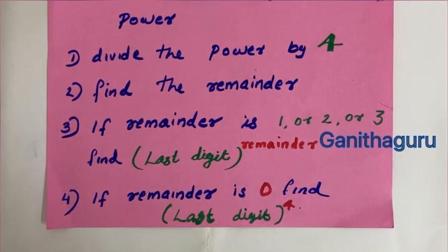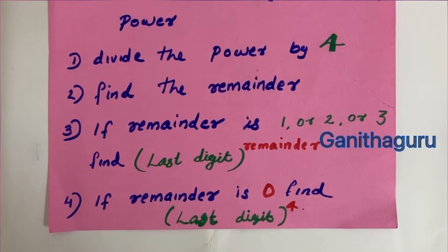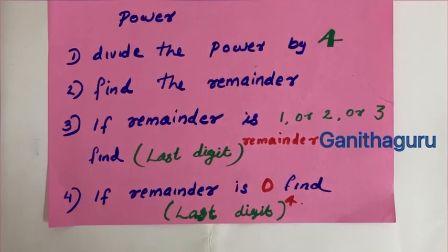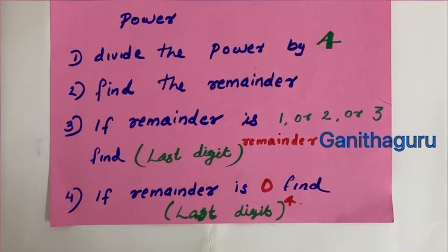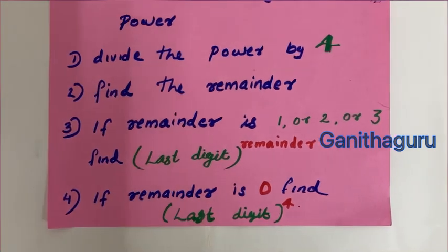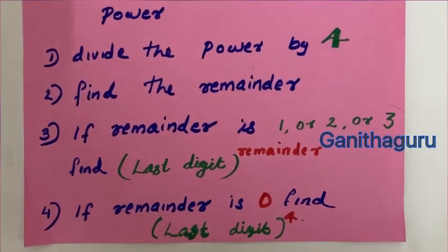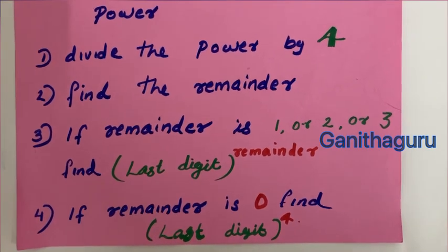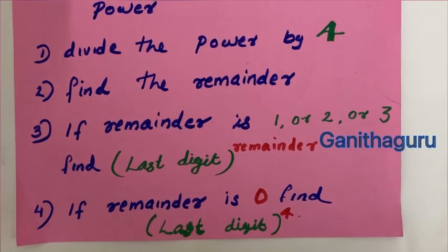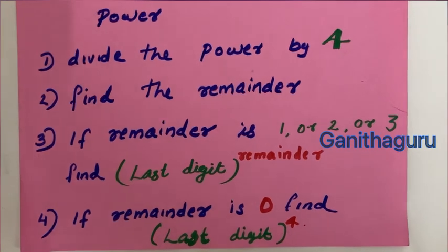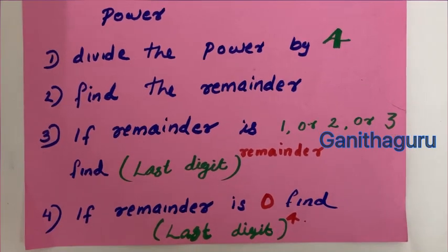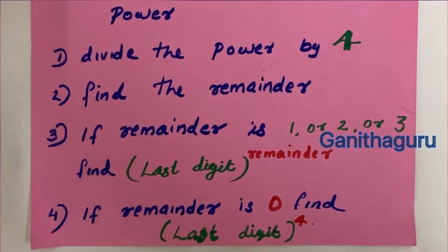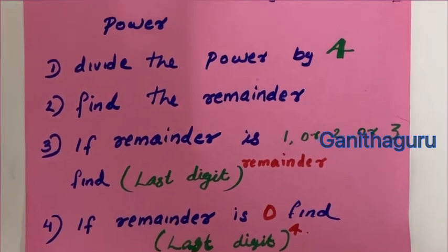Last digit raised to 1 — this is the remainder. Last digit raised to 2 — this is the remainder. We take 4 as the divisor. If the remainder is 0, last digit is raised to 4.